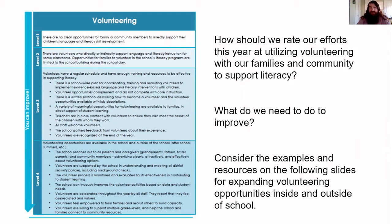For example, a team member might select level one if they don't think there are really any clear opportunities for family or community members to directly support their children's language and literacy skill development as volunteers. A member might select level four, on the other hand, if they believe there are a variety of volunteering opportunities and volunteering supports available in the school and outside the school that directly support language and literacy skill development for children.